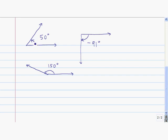Here are some approximate angles. I took the ray and rotated it in the counterclockwise direction by about 50 degrees, so this is going to be a 50 degree angle. In this case, the ray was rotated in the clockwise direction, so this angle has a measure of negative 91 degrees. This angle here has a measure of about 150 degrees.